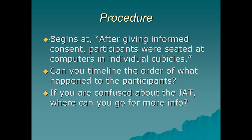Apparatus describes equipment that you use. And then finally you'll have a procedure section. The procedure section describes what happened to the participants and in what order. It describes how you randomly assigned participants to groups, what control measures you used, how you manipulated variables, and how you operationally defined variables.